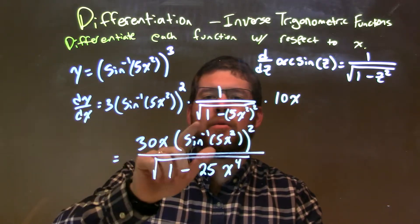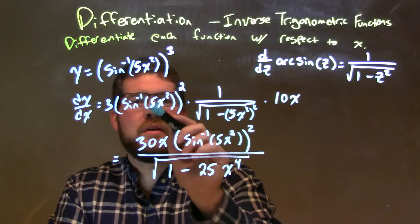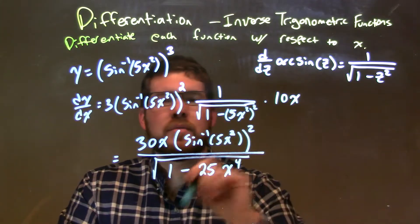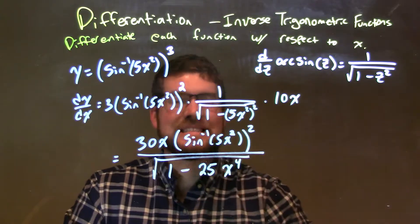The derivative of the inside, 1 over the square root of 1 minus the inside, the root of the inside of the arc sine, 5x squared, and we square that. Times the derivative of the inside inside part, 5x squared, which is 10x.